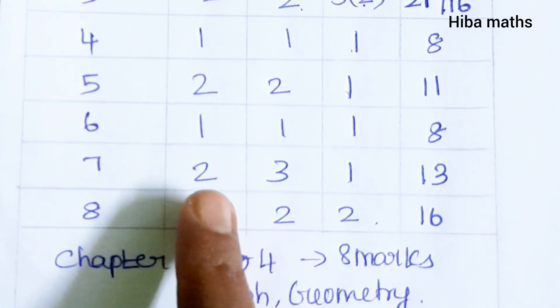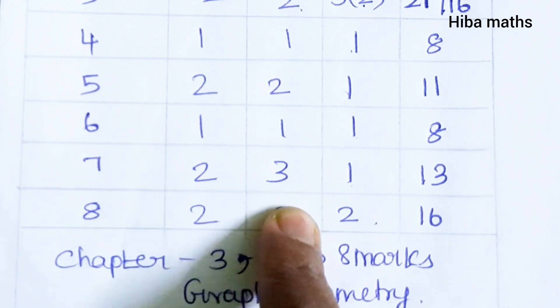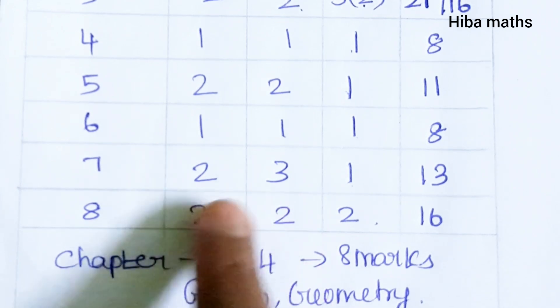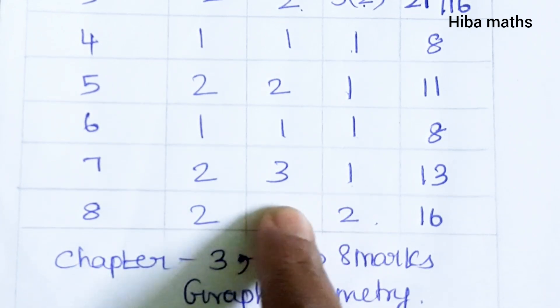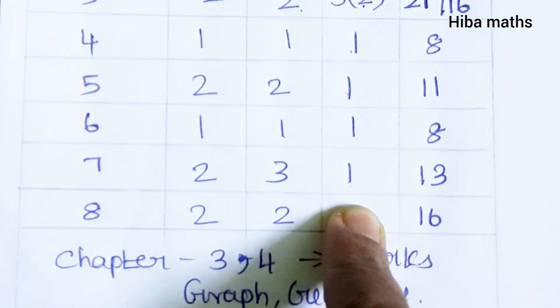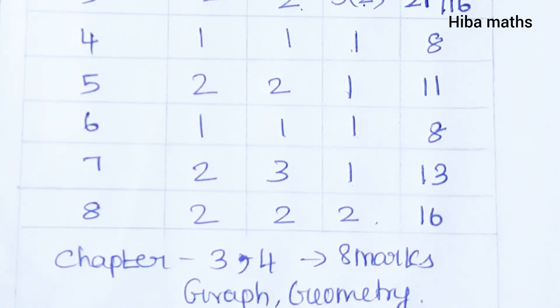The 7th lesson is the same: 2 one-mark questions and 3 two-mark questions. The 7th lesson has more than 2-mark questions. It is a 5-mark question, but the 7th lesson has no x-axis questions.